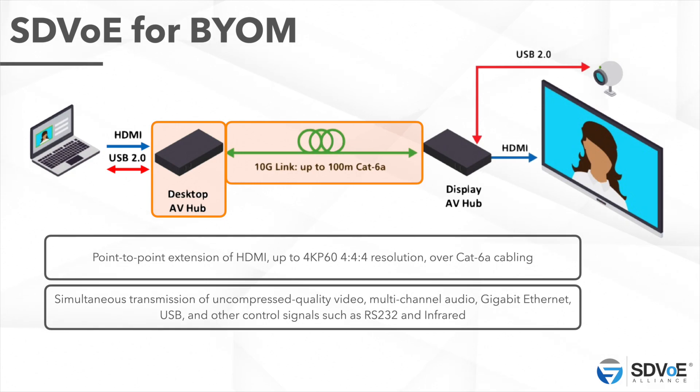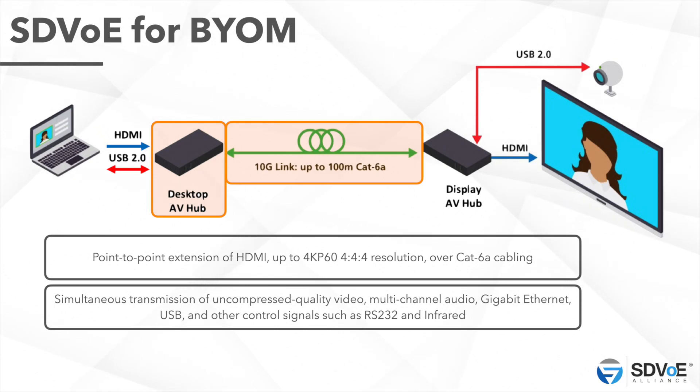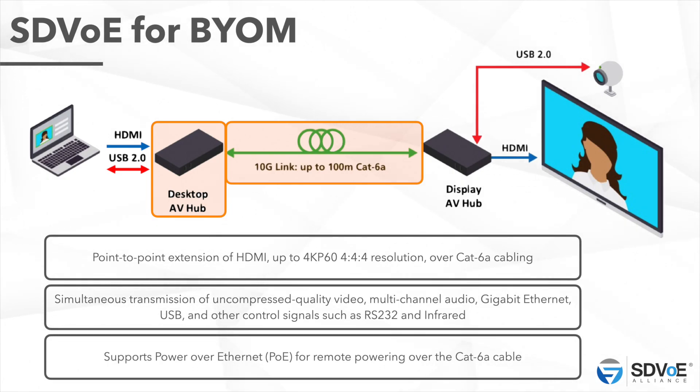You might even want to connect a network point to that device — maybe the Wi-Fi connectivity isn't particularly good — and you can do that by adding a gigabit Ethernet port to that endpoint. We can send USB 2.0 and other signals. Power over Ethernet is very important if you want to reduce clutter on the tabletop; you don't want to run a separate power supply for that little box sitting on the table, so power it over the cat cable from the display AV hub.